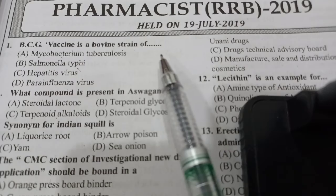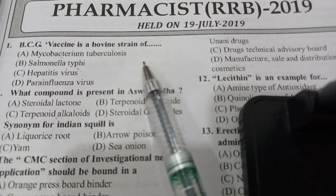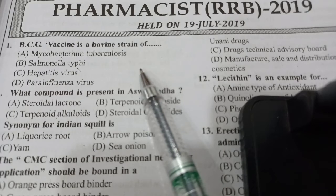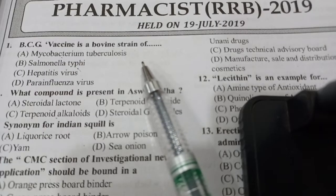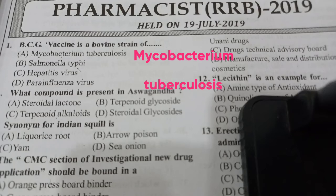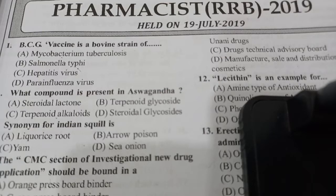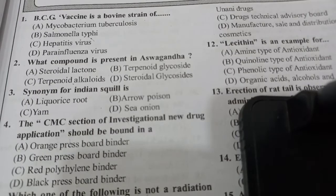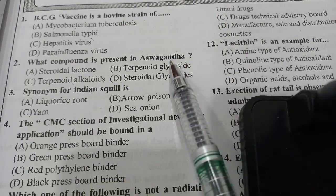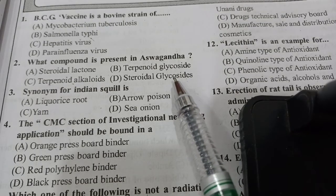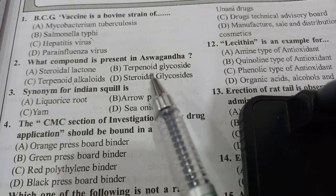BCG vaccine is a provided strain of which organism? Options: mycobacterium tuberculosis, salmonella typhi, hepatitis virus, para influenza virus. The answer is mycobacterium tuberculosis. BCG is prepared from a strain of the attenuated live bovine tuberculosis bacillus, mycobacterium bovis, that has lost its ability to cause disease in humans.